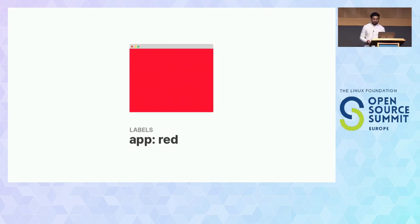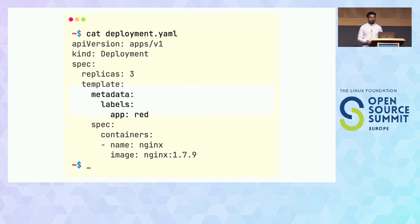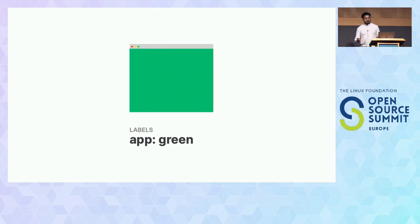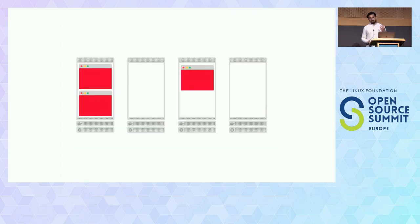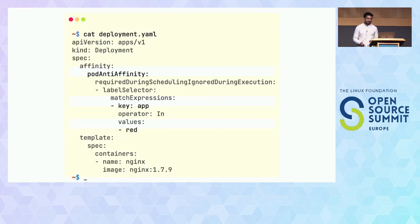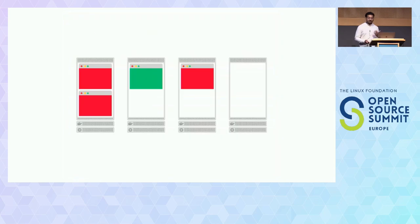We've got four nodes. I have a pod called app-red with the label app:red, deployed with three replicas across the first and third nodes. We now wish to deploy a second app — the green app — and we want it next to the red app, so we add pod affinity. We say it needs to be next to the red app. When the scheduler tries to schedule it, it will put it next to the red app — there's space on the third node, so it deploys there. Anti-affinity works the opposite way, putting it away from the red app.